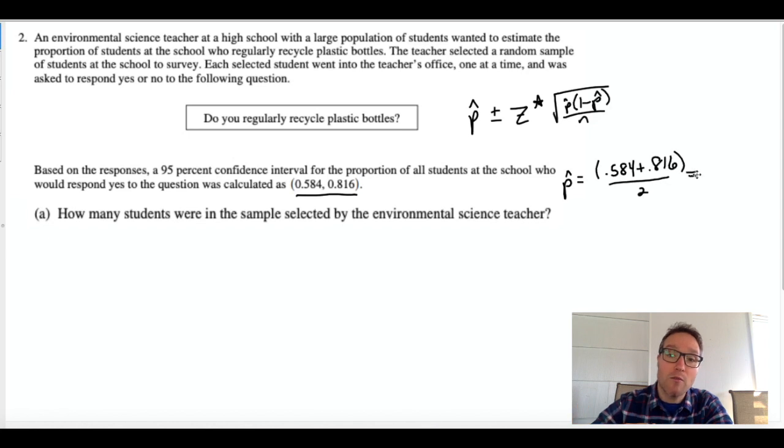All right, now what I'm doing is I'm trying to find the p-hat. The p-hat is the midpoint of the interval, the exact middle. So to do that you add and divide by two. It's like taking the average and you get 0.70.